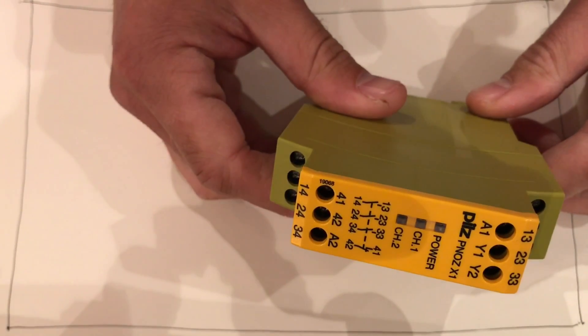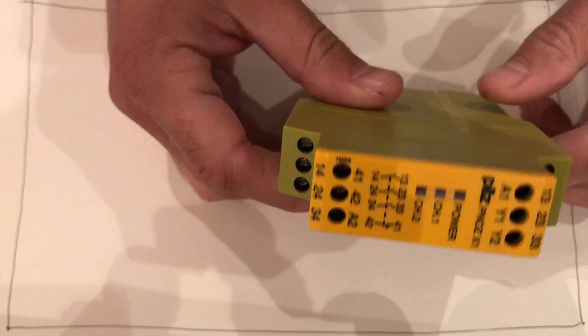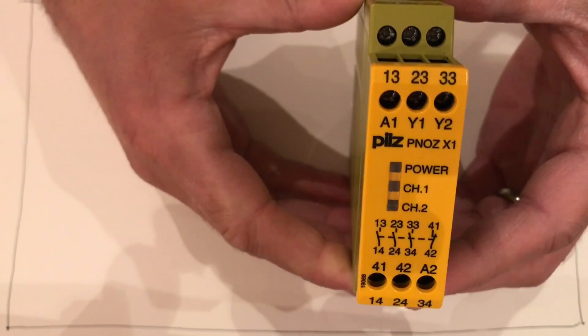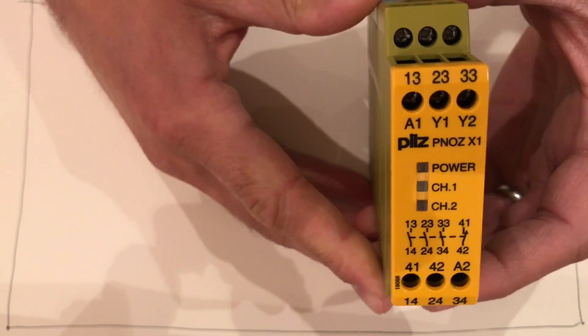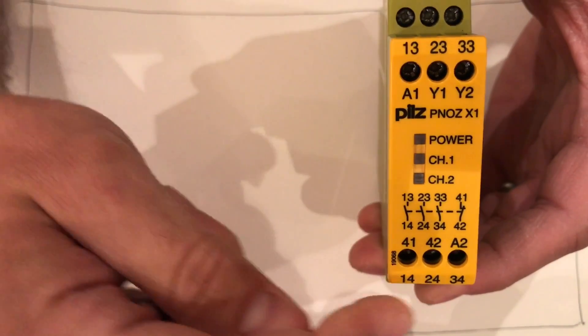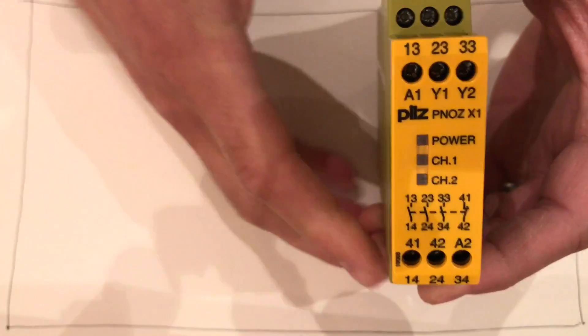This is a bit of overkill for a DIY machine, but it's a Pilz emergency stop relay. The power to the coil on the relay is between A1 and A2, and it's a 24 volt coil.